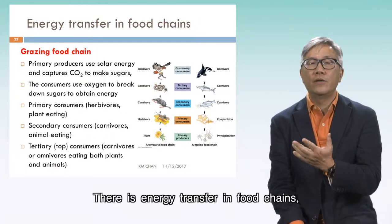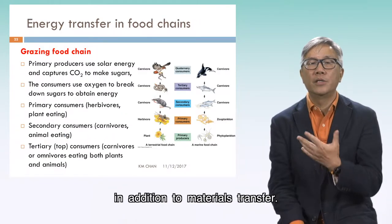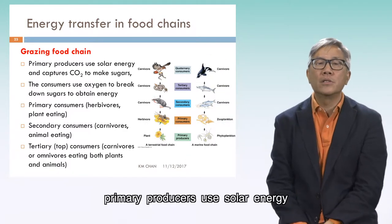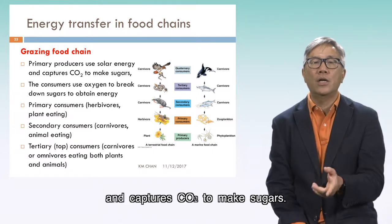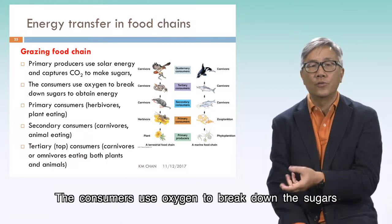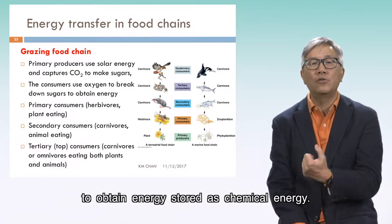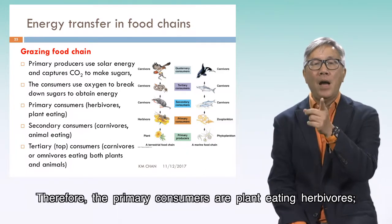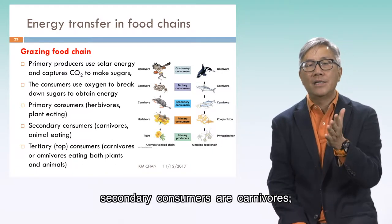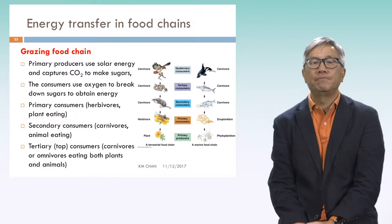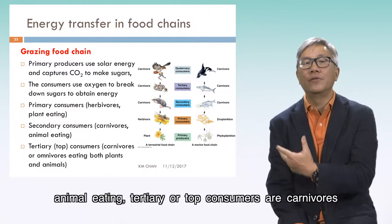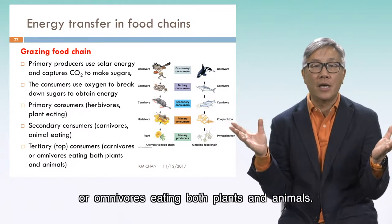There is energy transfer in food chains in addition to materials transfer. In the grazing food chain, primary producers use solar energy and capture carbon dioxide to make sugars. The consumers use oxygen to break down the sugars to obtain energy stored as chemical energy. Therefore, the primary consumers are plant-eating herbivores. Secondary consumers are carnivores, animal-eating. Tertiary or top consumers are carnivores or omnivores eating both plants and animals.